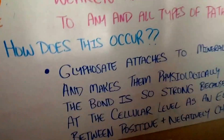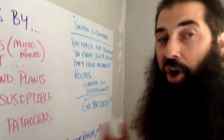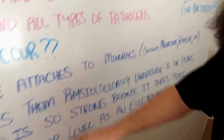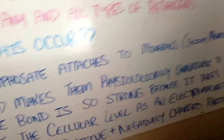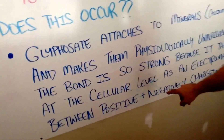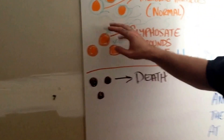Now, how does this occur? This occurs because glyphosate attaches to minerals — calcium, magnesium, phosphorus. We all know those are essential to the growth of a cannabis plant; actually, they're essential to all plants. It makes these elements physiologically unavailable to the plant — it puts them in a state where the plant can't use them. The bond is so strong because it takes place at the cellular level, and it's an electromagnetic force between positive and negatively charged particles. So when you look at this layman's term diagram, it's just a little barrier, but at the atomic level, once we block that particle and make it unavailable, it's blocked. Glyphosate is so strong — in layman's terms, it's as sticky as you could possibly imagine.